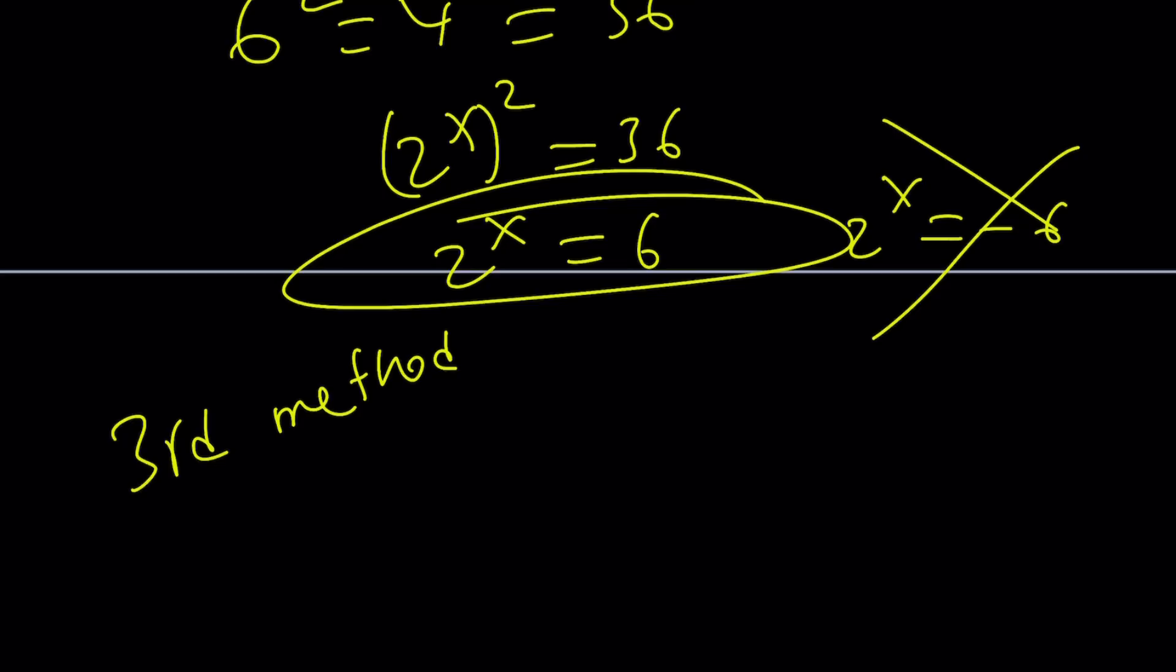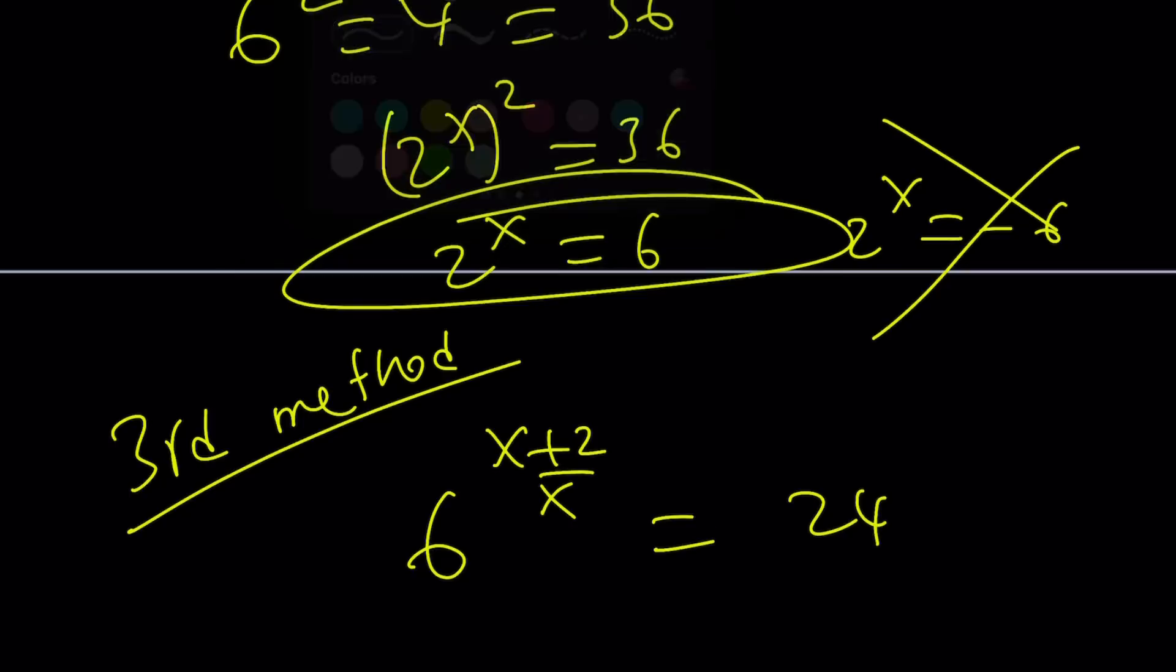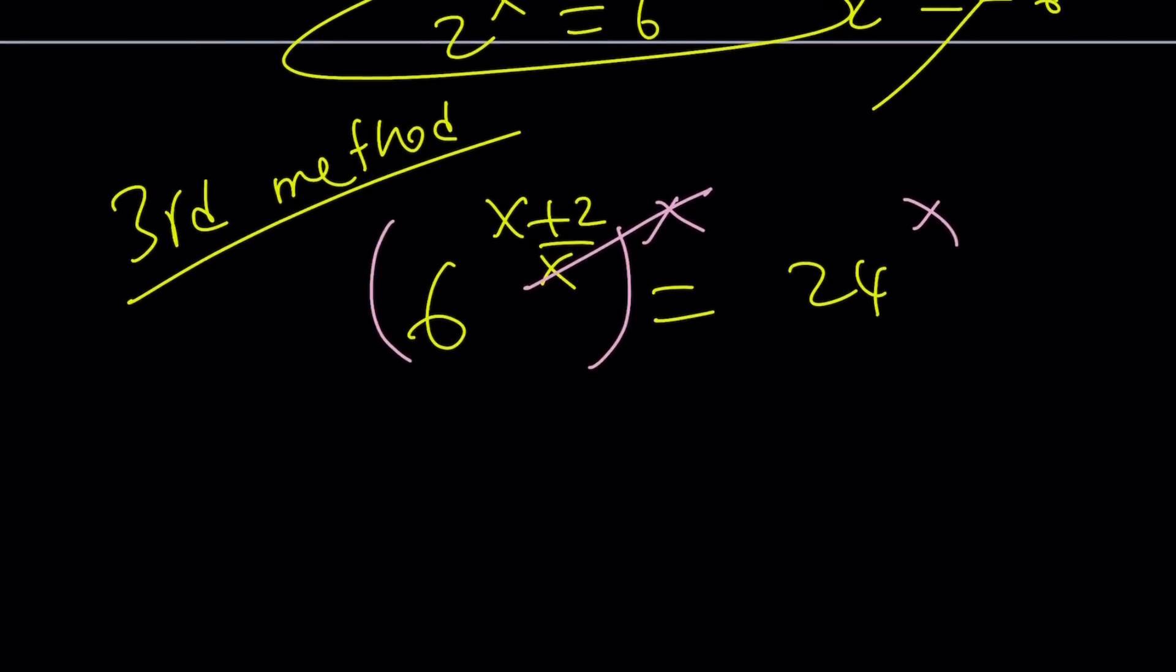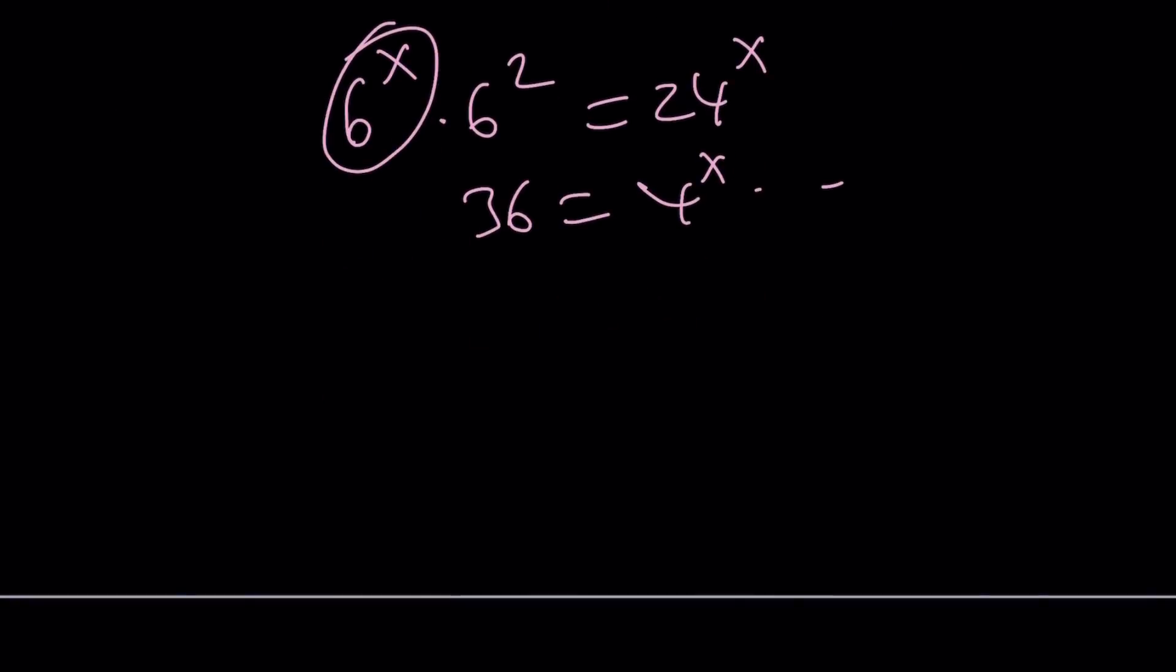Because they're pretty much the same. That's why I just want to show you that real quick. Now, we have this expression. Raise both sides to the power x directly. x cancels out. You get 6 to the power x times 6 to the power 2 equals 24 to the x. Divide both sides by this. You get 36 equals 4 to the x. And then square root, you'll get the answer. Let's go ahead and talk about the fourth method because I think that's a little different.